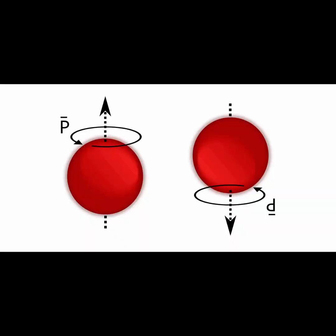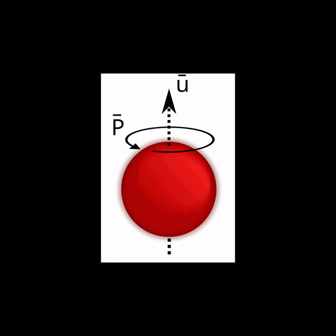For example, take two particles that have an inherent spin of one-half, like an electron. Each particle on its own can have a state where the spin is either up or down.